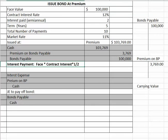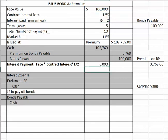The next thing you need to do is calculate the interest payment. Get out your calculator and calculate this with me — in some homework problems they give you the interest payment, but you need to be able to calculate this for the test. You'll take one hundred thousand times the percentage rate of 0.12, or twelve percent, divided by the number of payments per year which is two, giving you six thousand dollars. That means every six months we're going to send the bondholder a check for six thousand dollars.